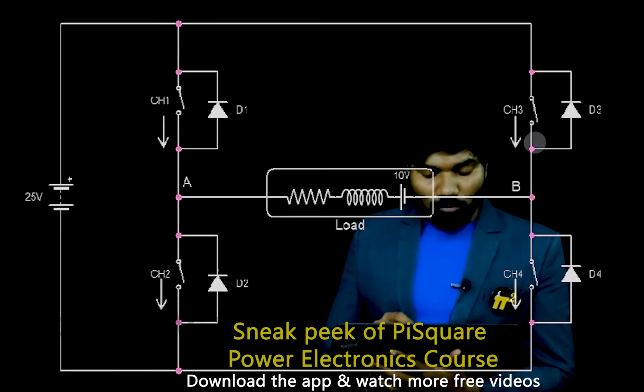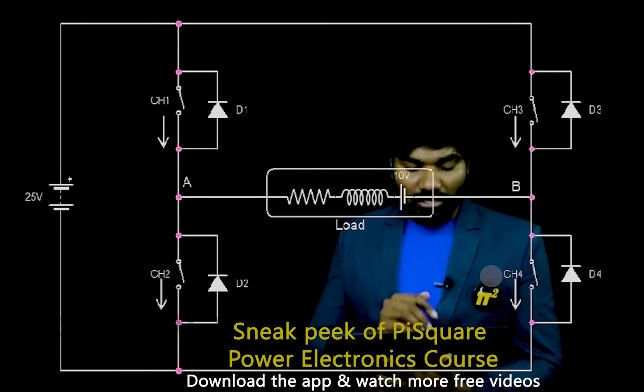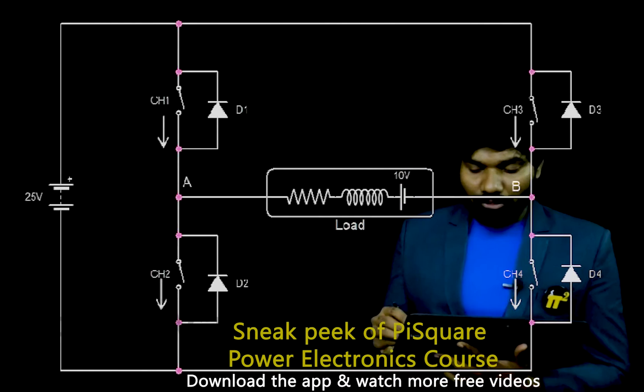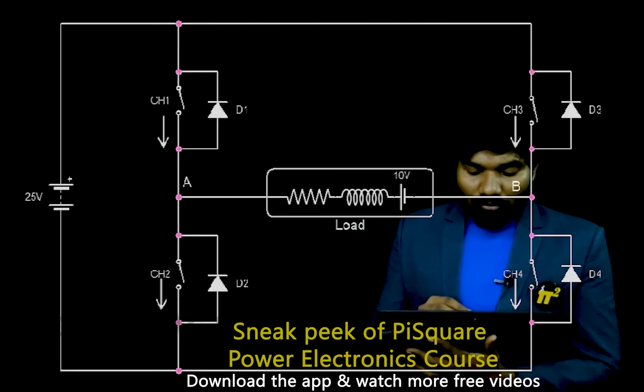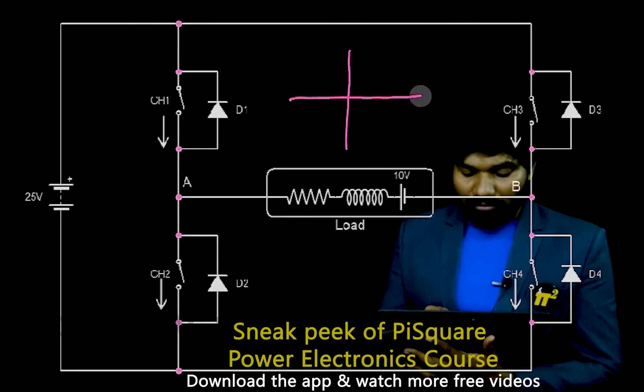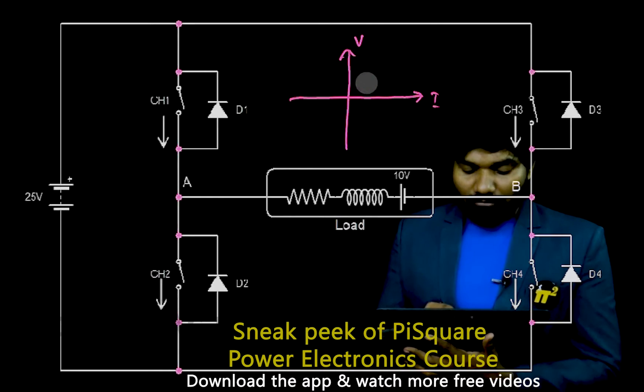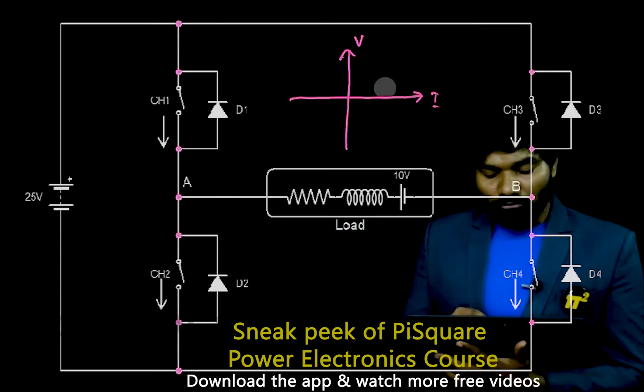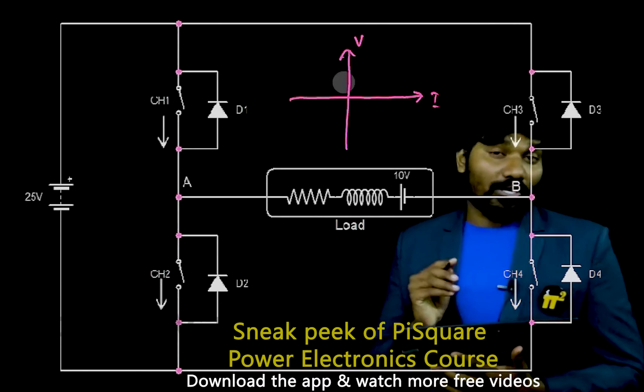So this is the Type E chopper configuration or inverter configuration. Now, I want to use this one as a Type E chopper, means I want this to work in all four quadrants. If I take this one as voltage and this one as current: first quadrant, second quadrant, third quadrant, fourth quadrant - all four quadrants it will operate.